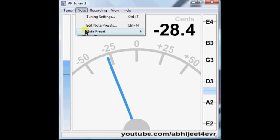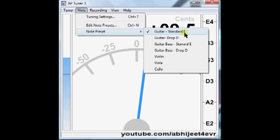For example go to note, note preset and you'll find standard E tuning for your guitar, drop D tuning, standard E and drop D tuning for bass guitar, violin, viola etc. Let's leave it for our 6 string standard E tuning.